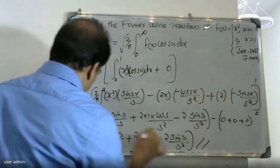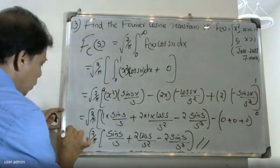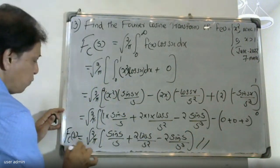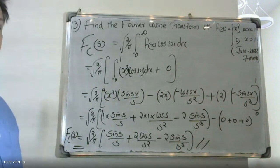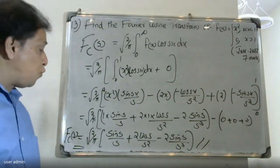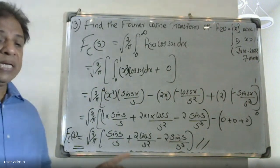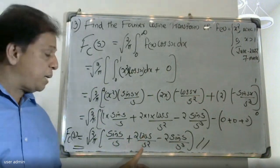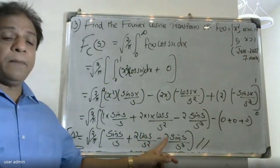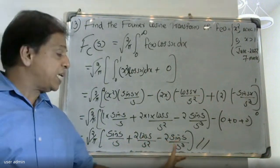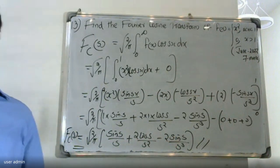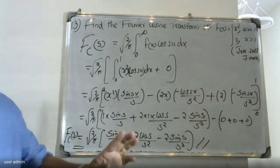This is the Fourier cosine transform. The Fourier cosine transform answer is: root of 2 by pi times [sin(s)/s + 2·cos(s)/s² − 2·sin(s)/s²]. This is the Fourier cosine transform.